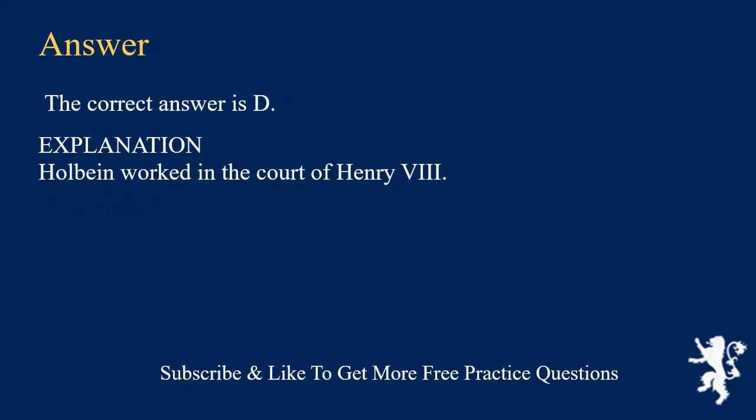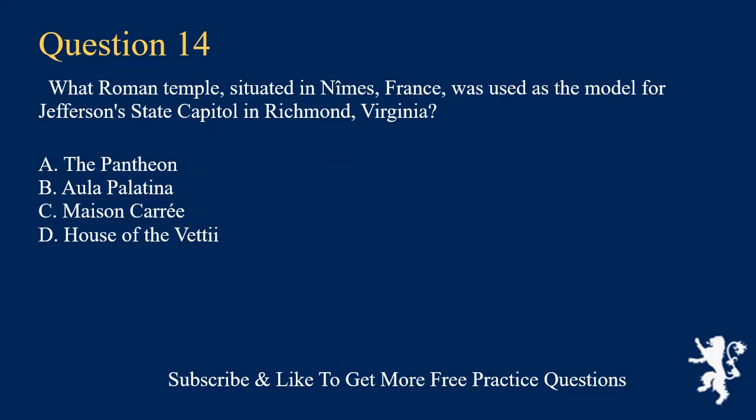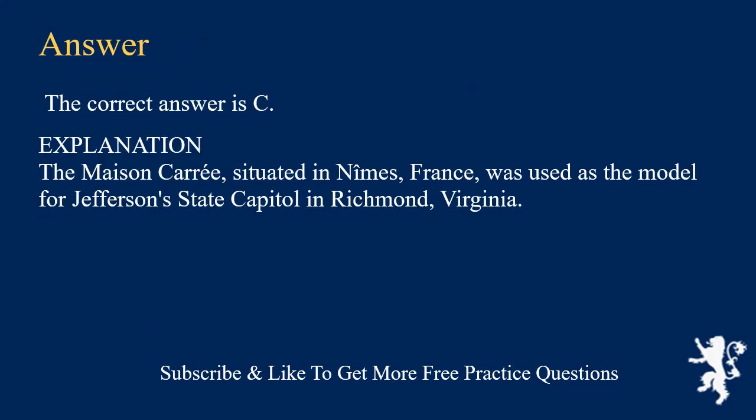Explanation: Holbein worked in the court of Henry VIII. What Roman temple, situated in Nîmes, France, was used as the model for Jefferson's state capital in Richmond, Virginia? A. The Pantheon. B. Alla Politina. C. Maison Carrée. D. House of the Vettii. The correct answer is C.